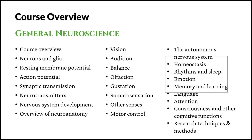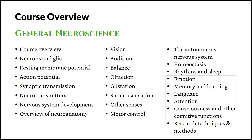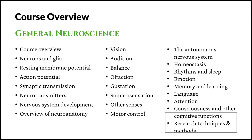Then finally, we will come upon some of the higher cognitive functions, including emotion, memory and learning, language, attention, consciousness, and other cognitive functions. At the end, we will learn about some research techniques and methods that are used in neuroscience research.